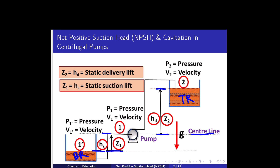Point 0.1 is the pump suction point where V1 is the velocity and P1 is the pressure. Point 1-dash is the surface of the liquid at the bottom reservoir, where V1-dash is the velocity and P1-dash is the pressure. Since the bottom reservoir is open to atmosphere, P1-dash is atmospheric pressure.